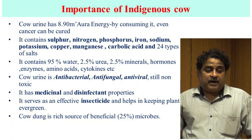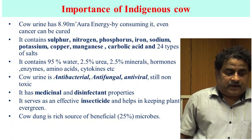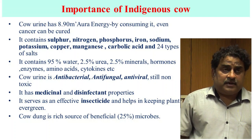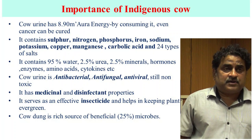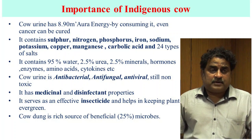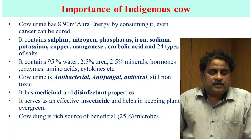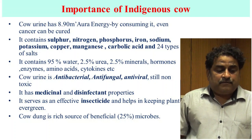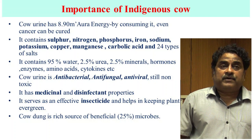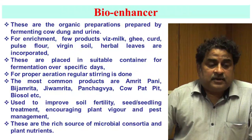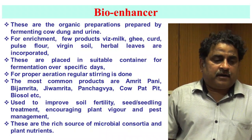Cow urine also possesses antibacterial, antifungal, antiviral properties and is non-toxic. It has medicinal and disinfectant properties. In villages, people use a cow dung and cow urine mixture for pasting walls because it possesses disinfectant properties. It also serves as an effective insecticide and keeps plants evergreen. Cow dung is a rich source of beneficial microorganisms, and the nutrient content and beneficial microorganism population is higher in indigenous cows compared to Jersey cows.